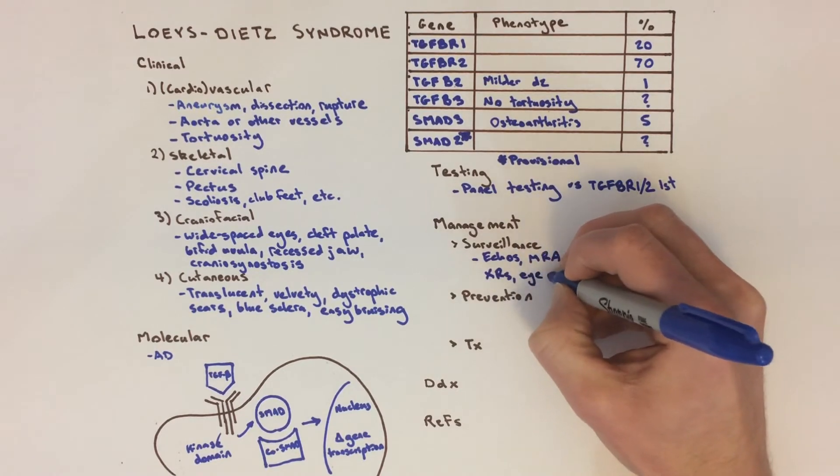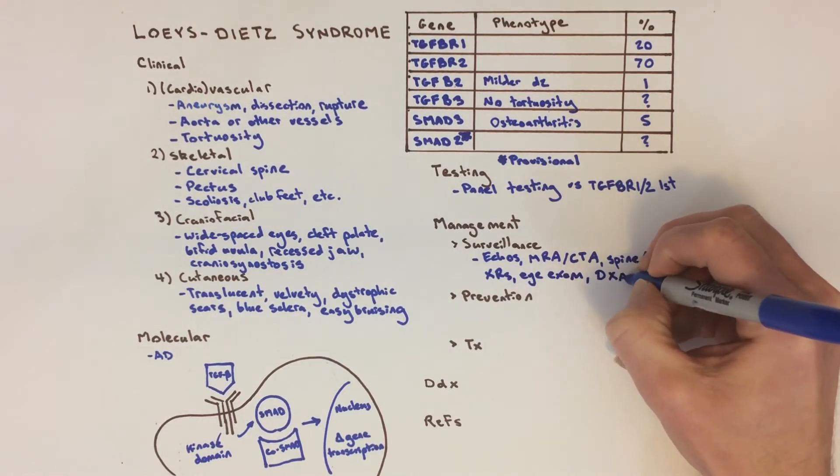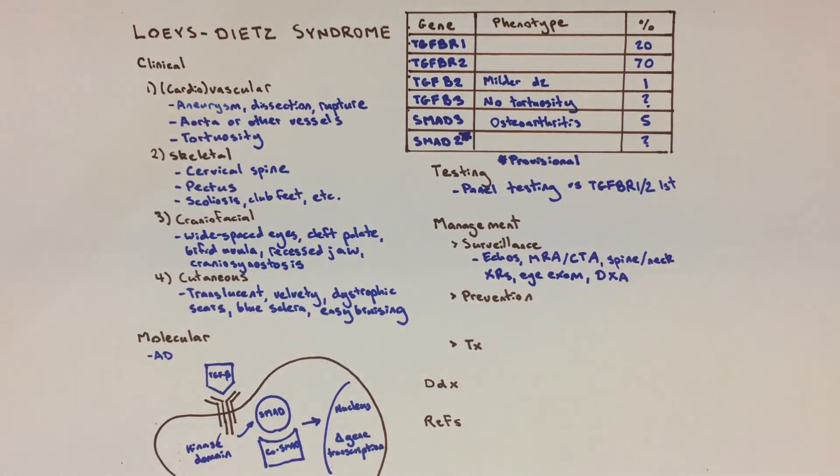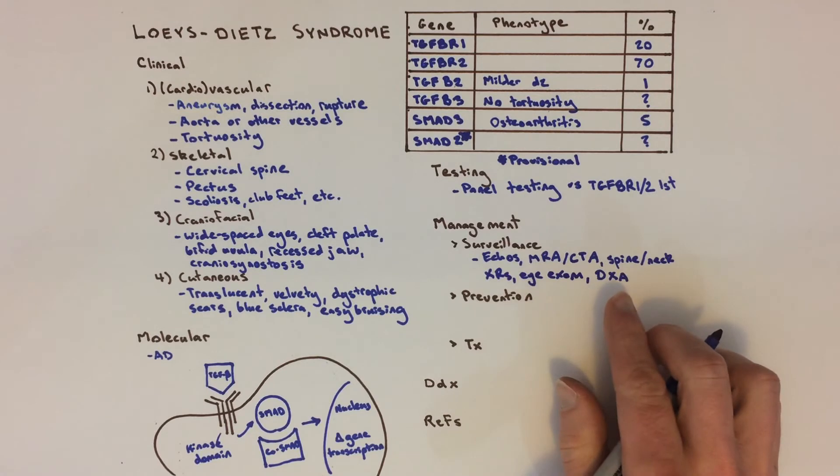An x-ray of the spine screens for scoliosis, and an x-ray of the neck looks for cervical spine deformities. Eye exams monitor for retinal detachment and myopia, and bone density can be tracked by DEXA scans. Food allergy testing may be appropriate in children with failure to thrive.